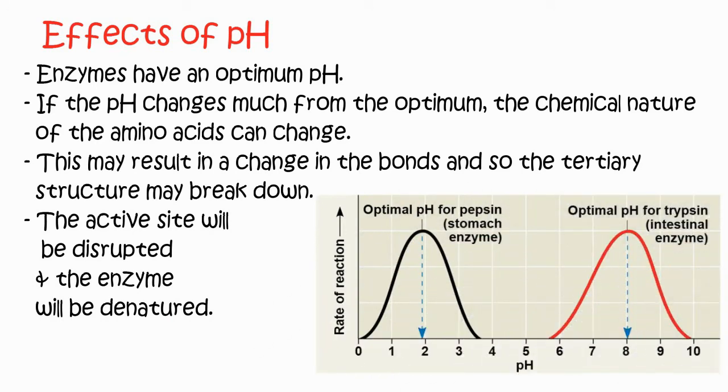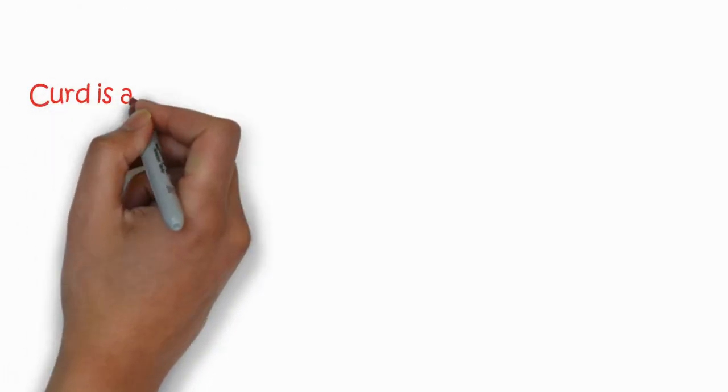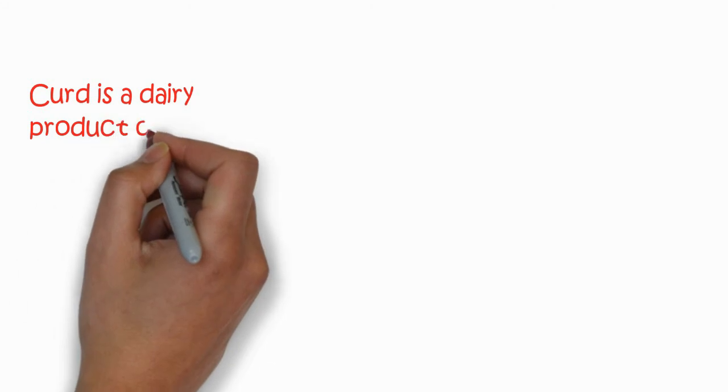pH is very important. There are enzymes for different pH ranges, like pepsin and trypsin. You can see the activity at different pH ranges in the acidic and basic range.